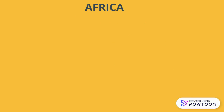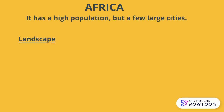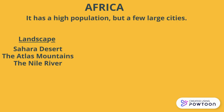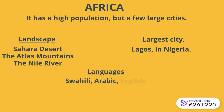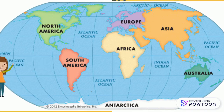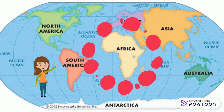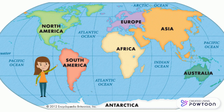Africa. It has a high population but a few large cities. Landscape: the Sahara Desert, the Atlas Mountains, and the Nile River. The largest city is Lagos in Nigeria. Languages: Swahili, Arabic, English, and French. Here I am again to show you Africa on the map. As you can see, it's south of Europe and it's between the Atlantic and the Indian Ocean.